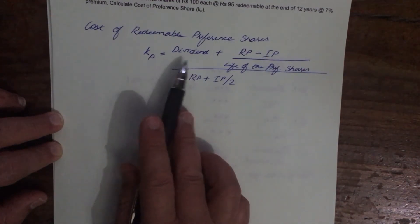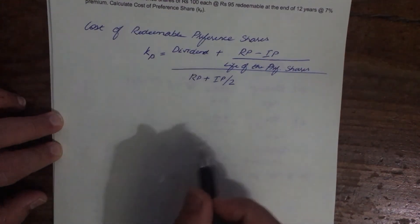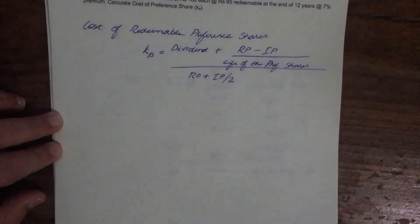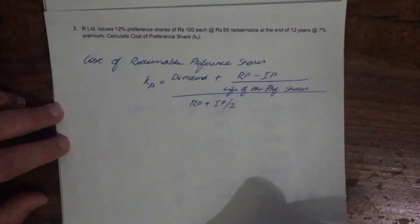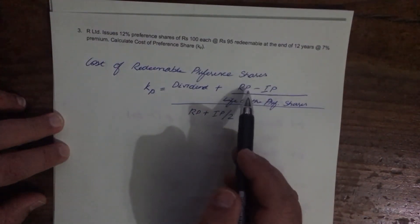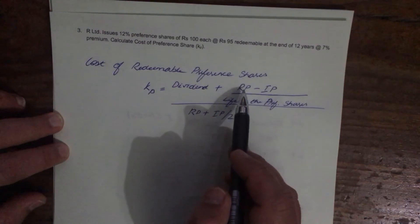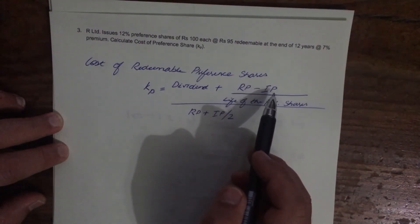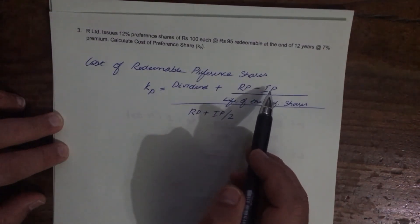So that is the formula. RP is the redemption price and IP is the net issue price. Now let's solve the problem.